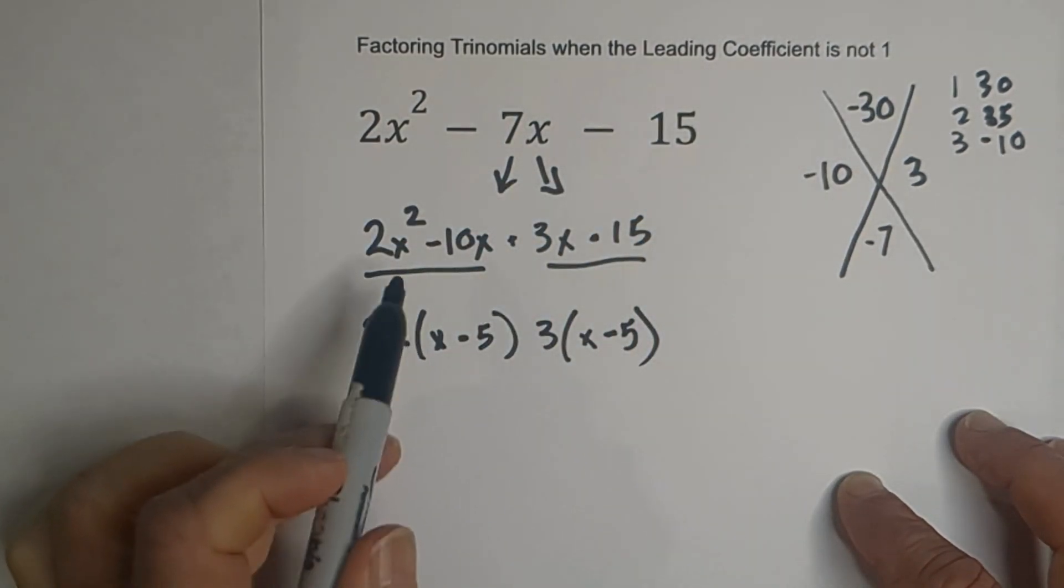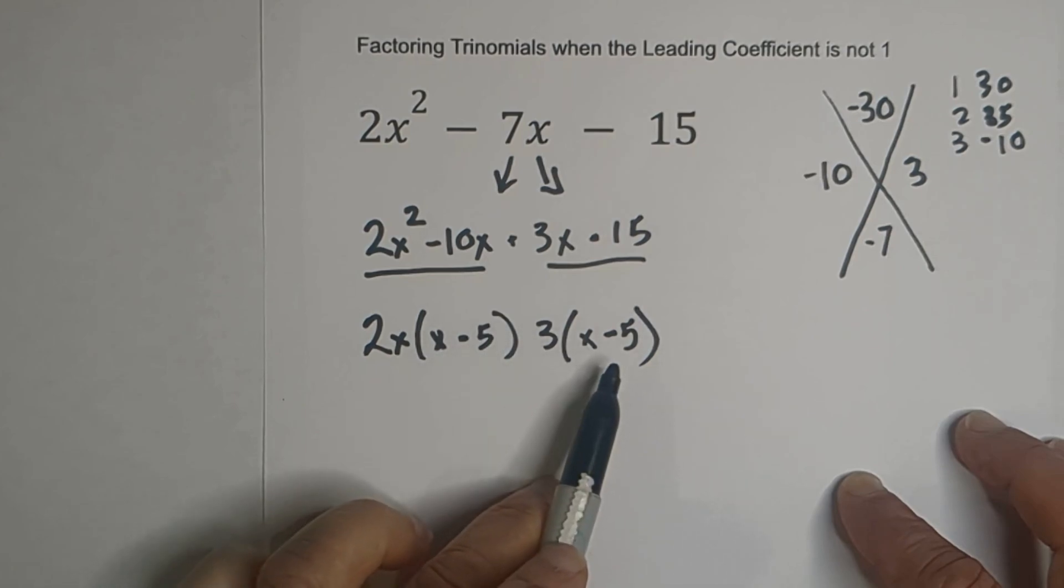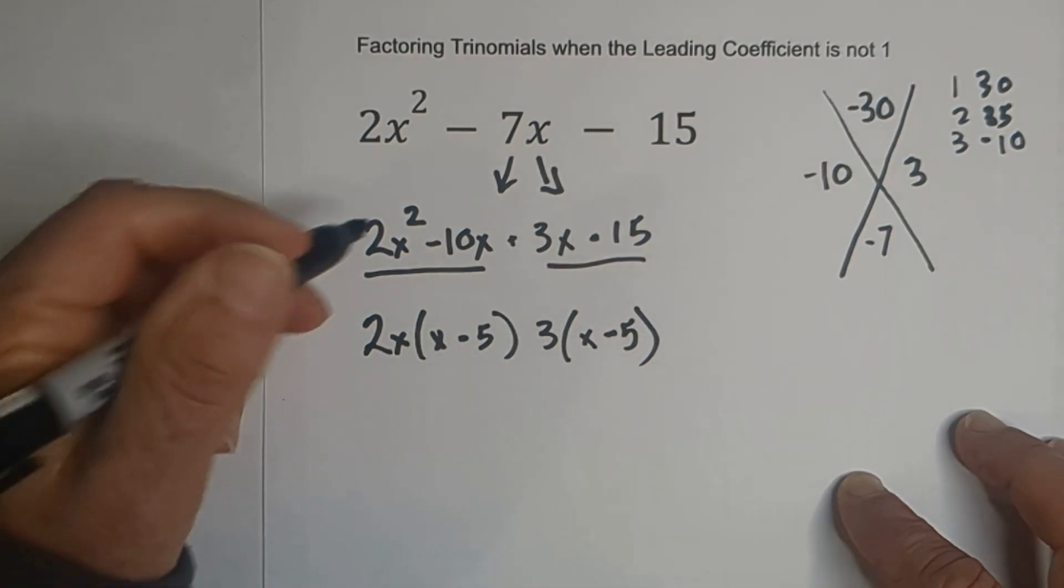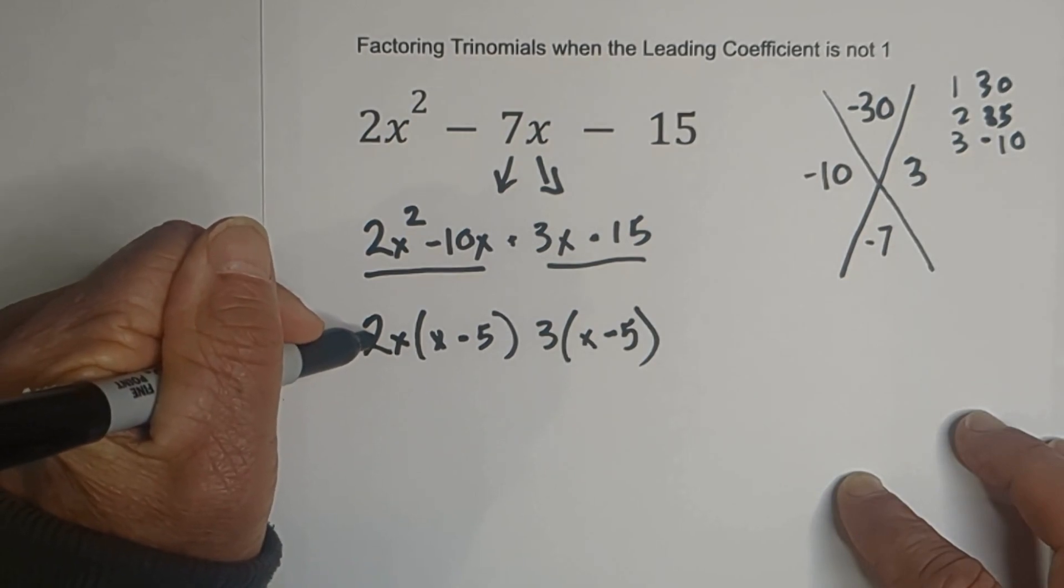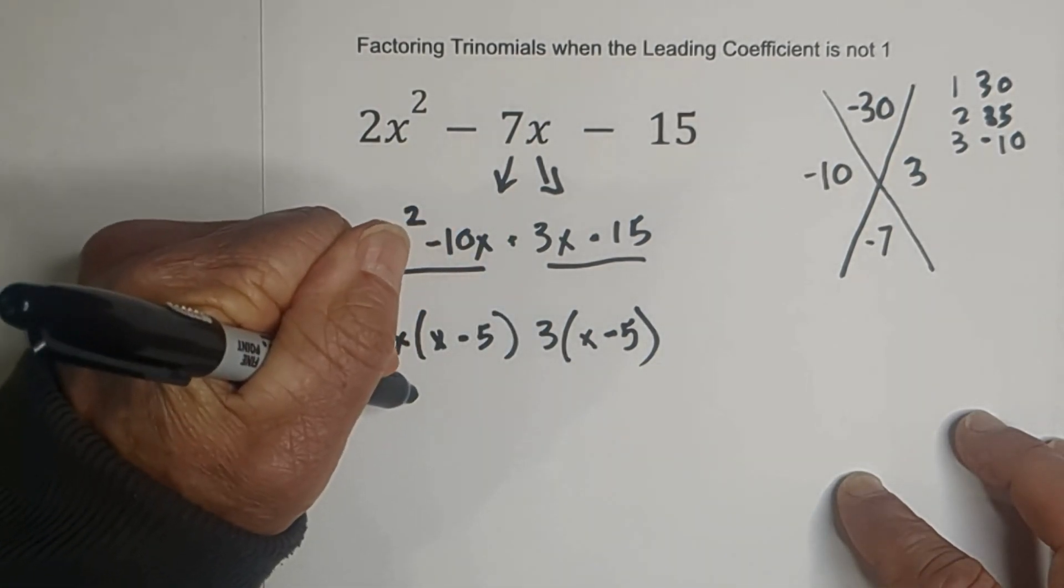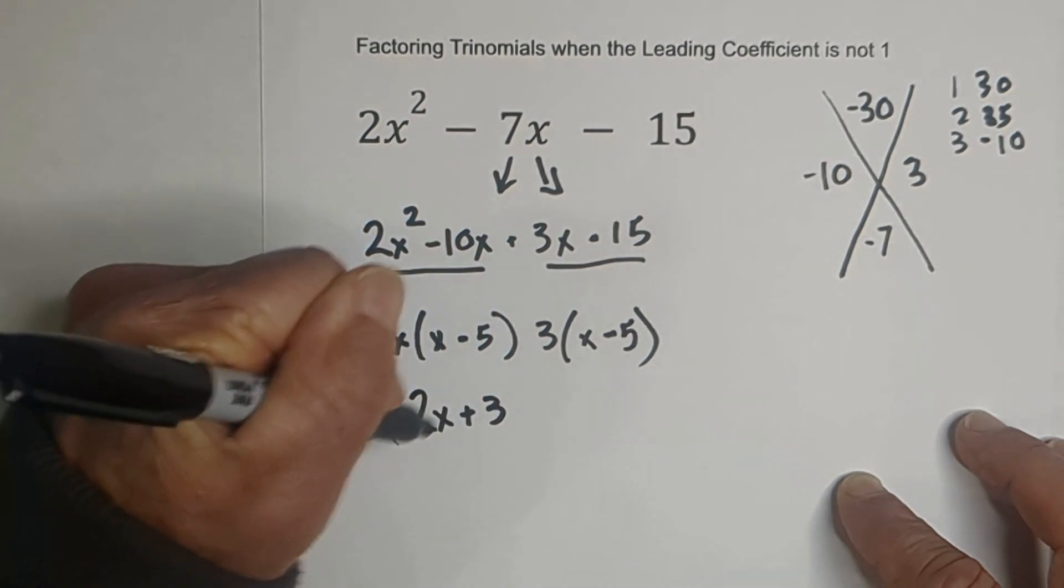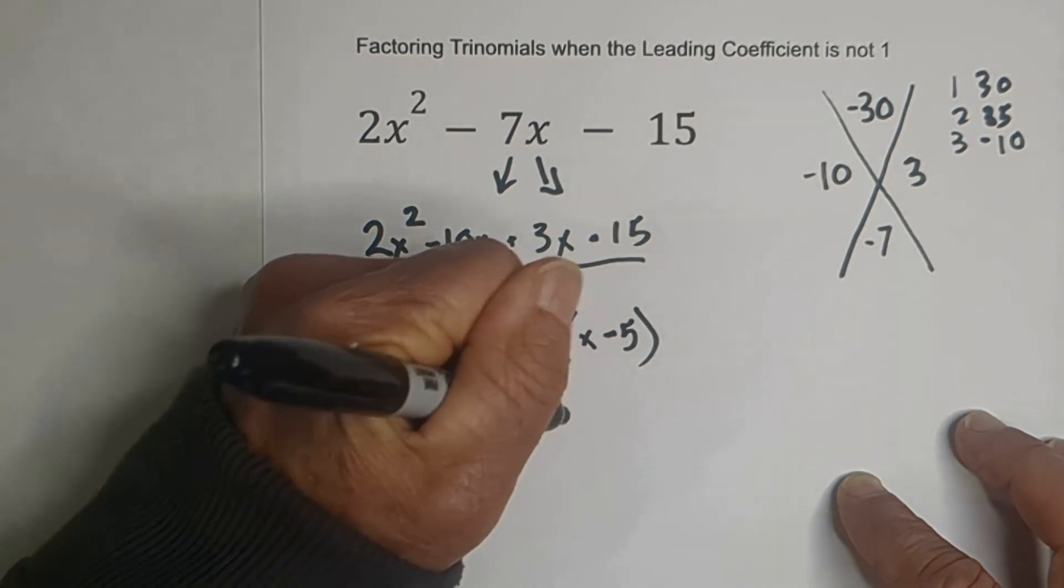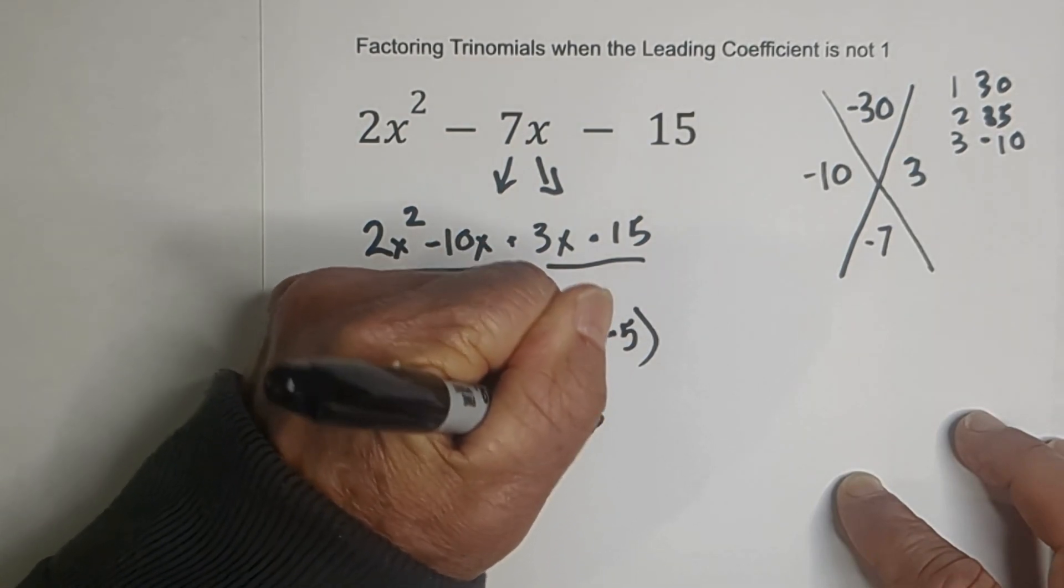You have factored it properly if these two match. Now all we do is we just take this term in front of the parentheses, both of the terms in front of the parentheses. And we have 2x plus 3 in parentheses times x minus 5.